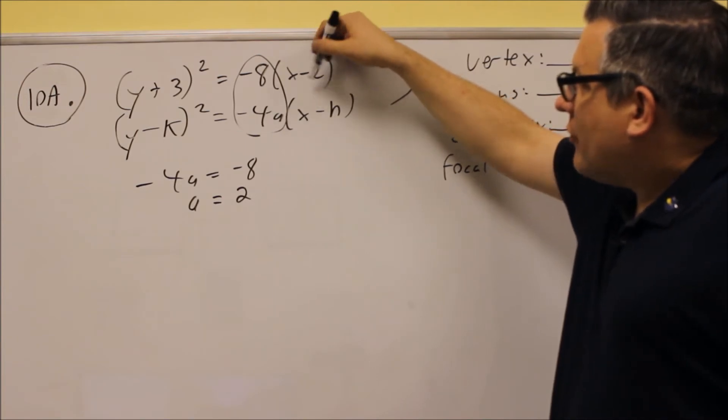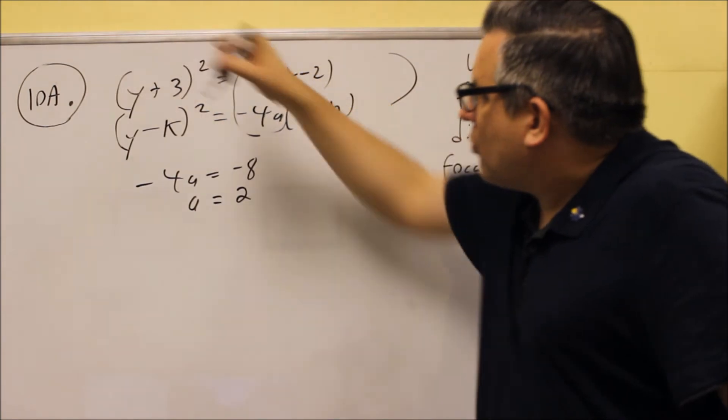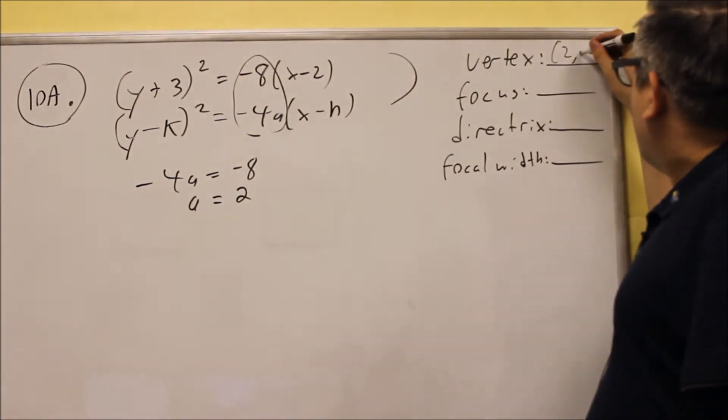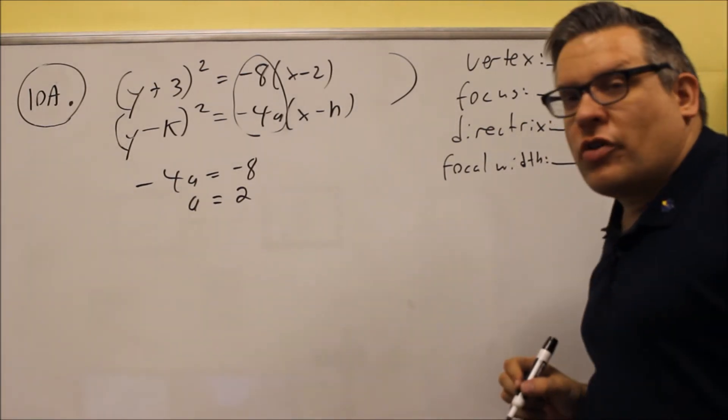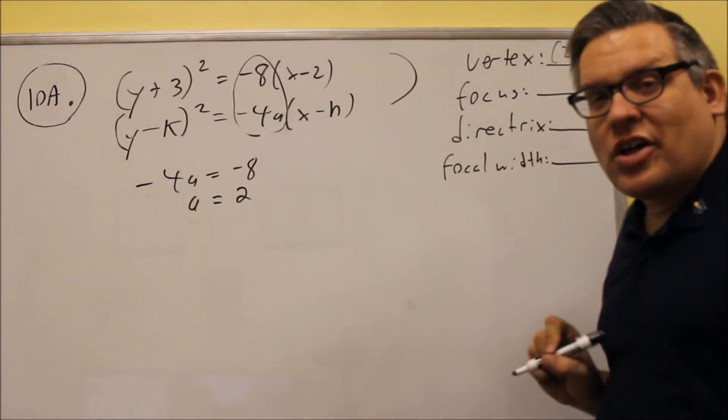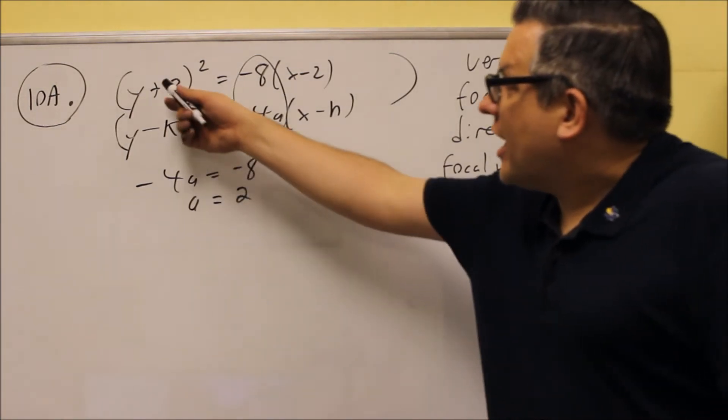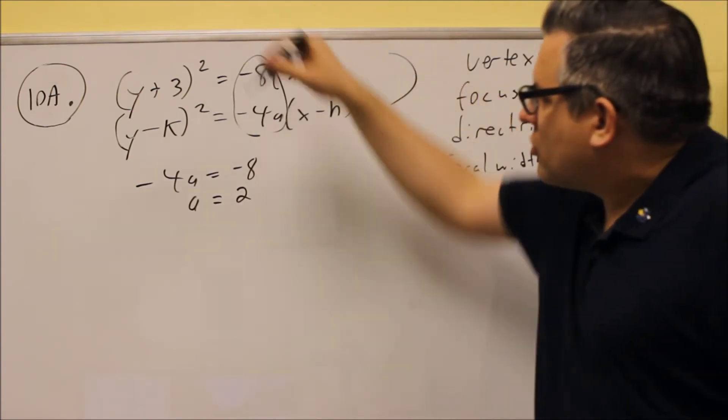Your vertex is opposite sign of negative 2, which is positive 2. Opposite sign of positive 3 is negative 3. So 2, negative 3 will be the coordinate for the vertex. Remember that the x value has to come first. So, another common mistake is to write negative 3, 2 as a vertex, but remember x has to come first, so that's why we're doing that.